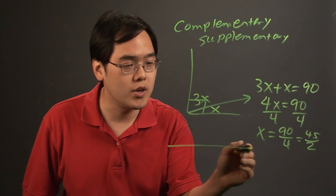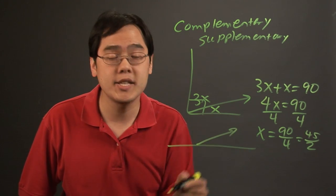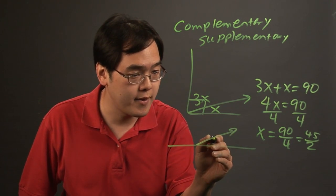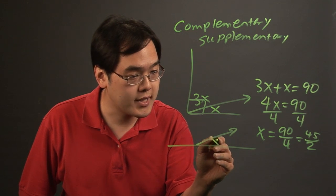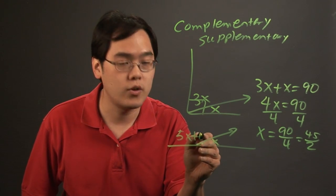Now for supplementary angles it involves taking a straight line which is 180 degrees and splitting that into two parts. So you might have for example x and then let's just say 5x plus 1 just as an illustration.